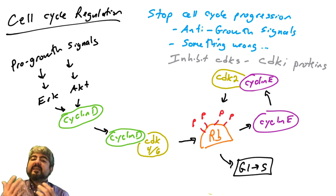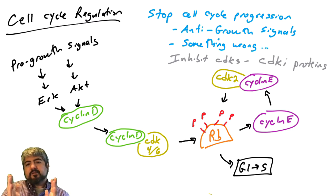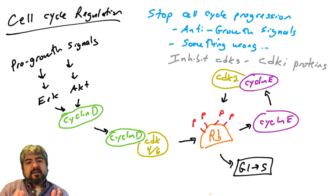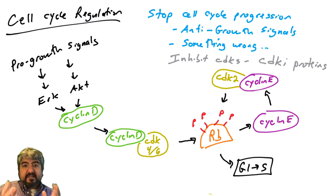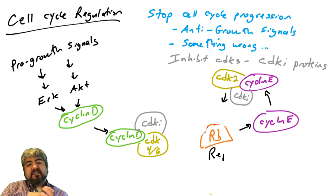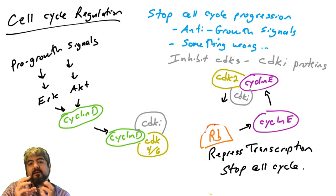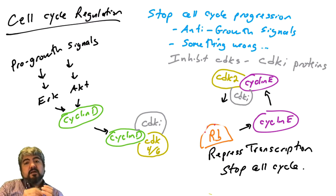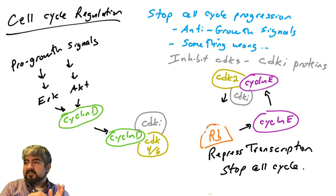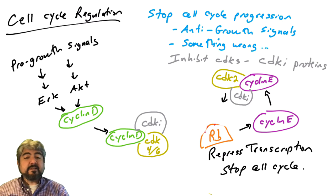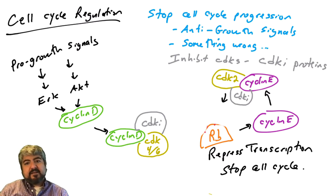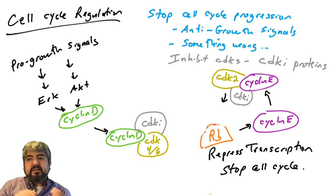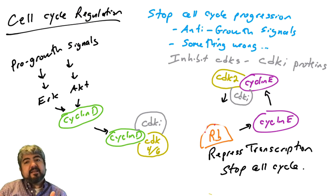CDKIs or CDK inhibitors are proteins produced by the cell — not to be confused with pharmaceutical kinase inhibitor drugs that bind the ATP binding pocket. These CDKi proteins bind to CDKs or CDK-cyclin complexes and inhibit the function of cyclin-dependent kinases. If CDKs are inhibited, they cannot phosphorylate their substrates, meaning proteins such as RB will not become phosphorylated, and cells will not progress through the cell cycle.